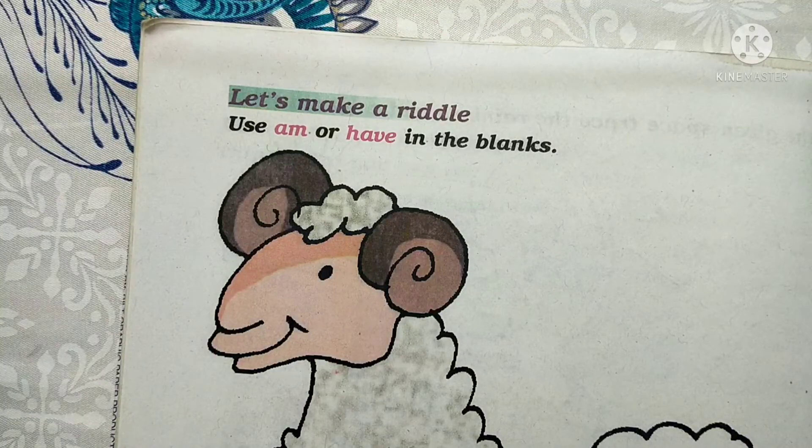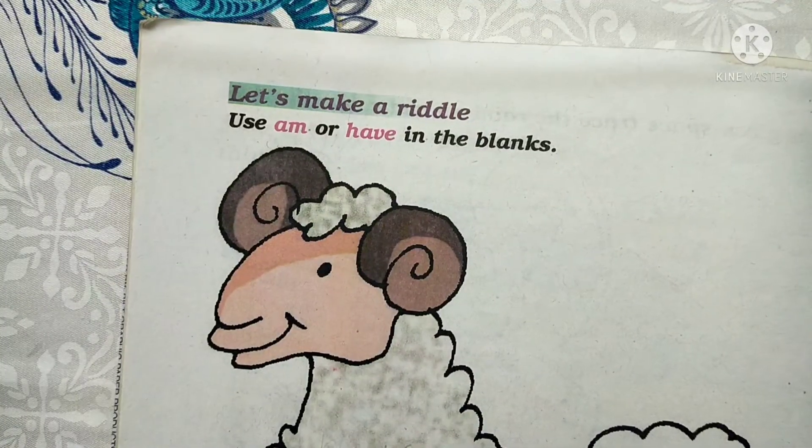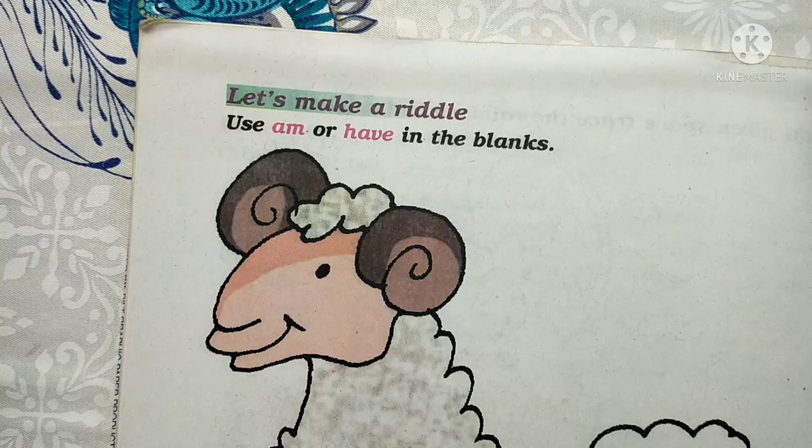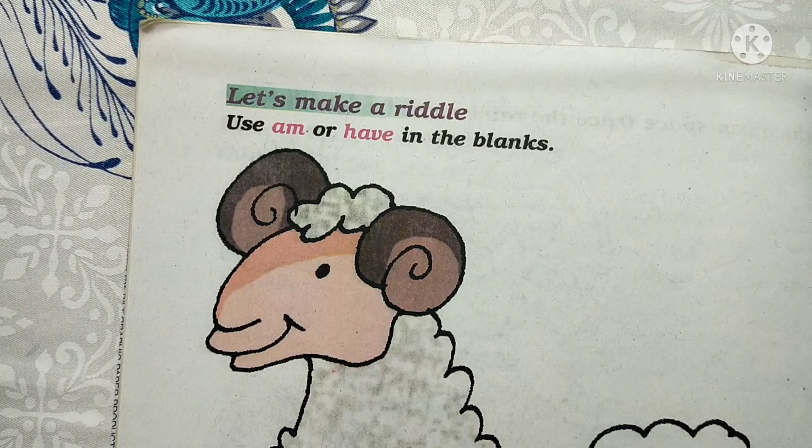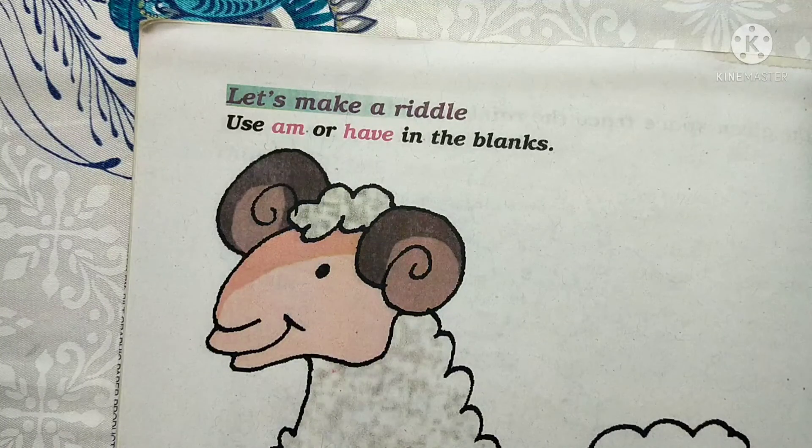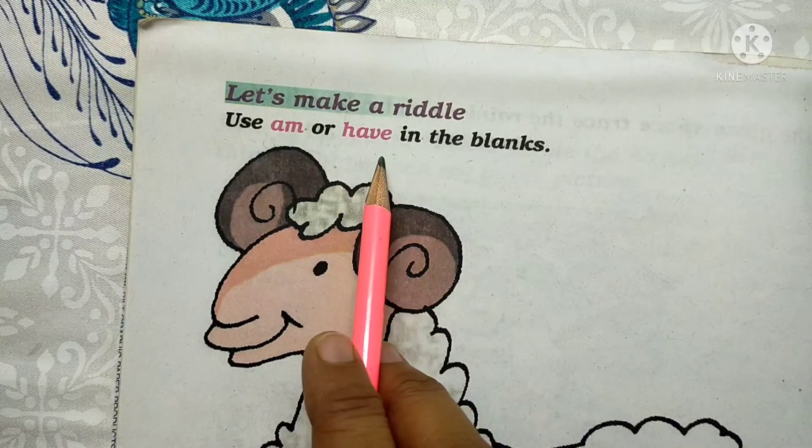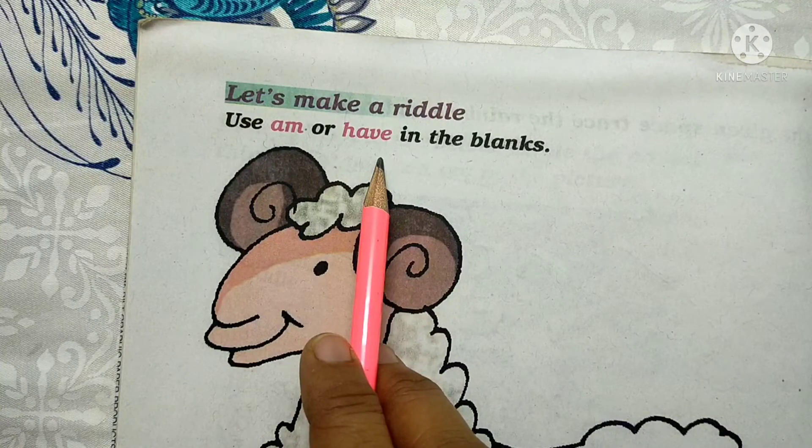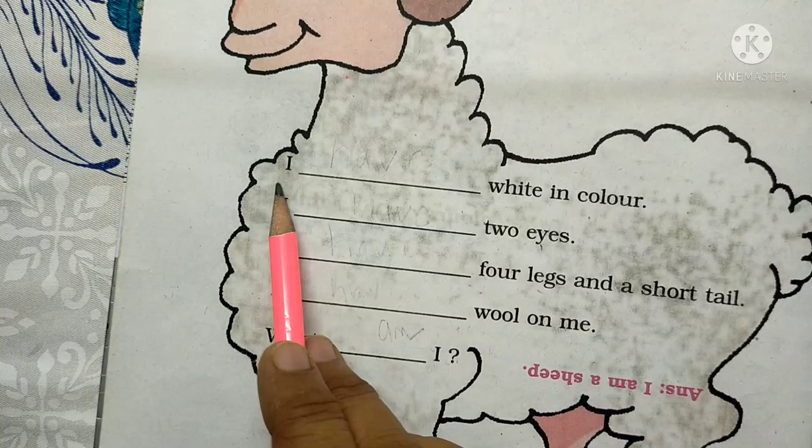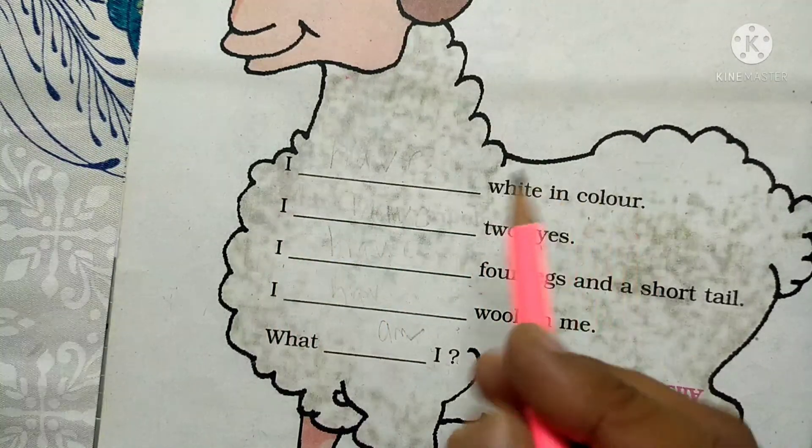See page number 108 of your textbook. What is written here? Let's make a riddle. What we have to do? We have to make a riddle. And what is written? Use 'am' or 'have' in the blank. I dash white in color. So what will it be? I am white in color.